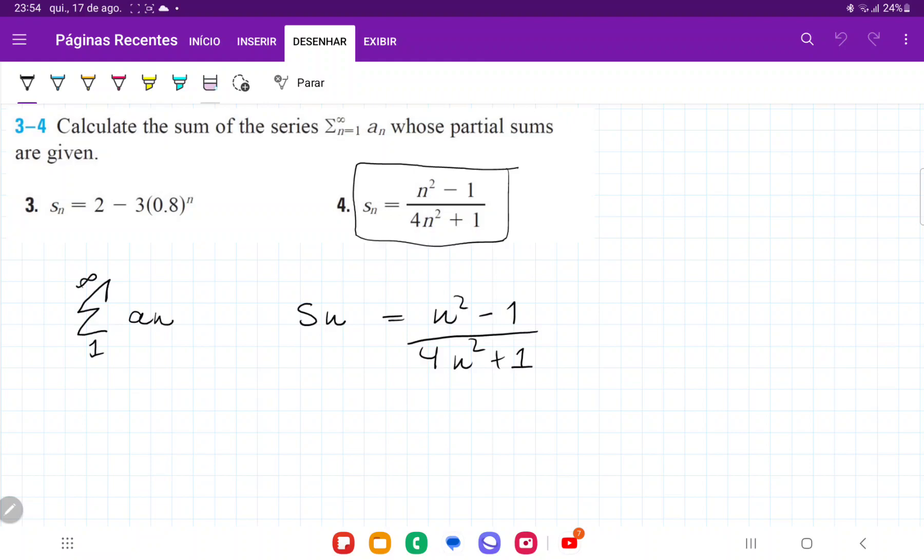What we have to do here is we have to take the limit as n approaches infinity of this guy over here. Because if we take this limit, it's like seeing what happens to the sum as we add infinite terms.